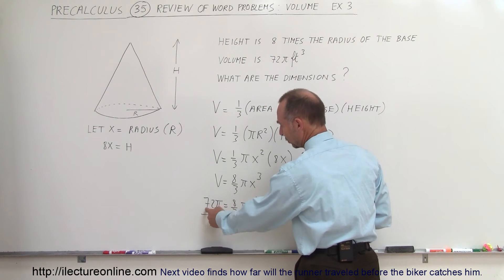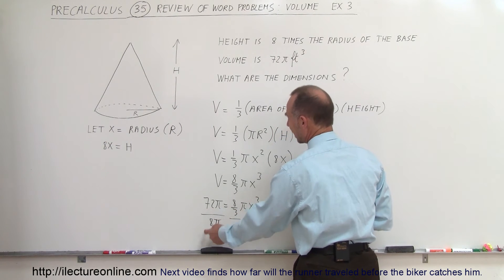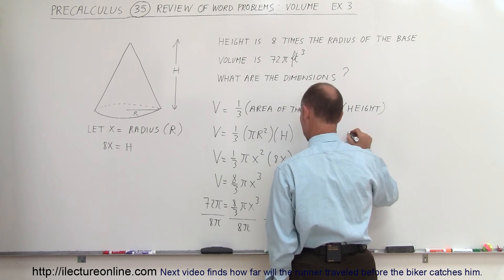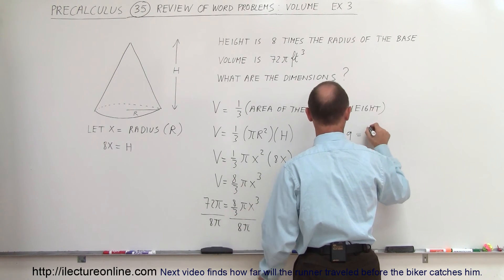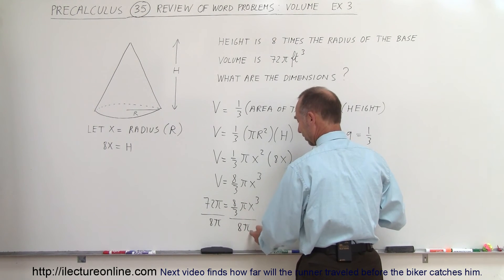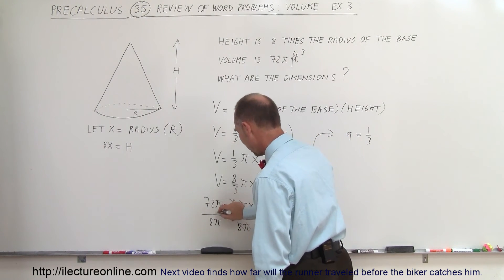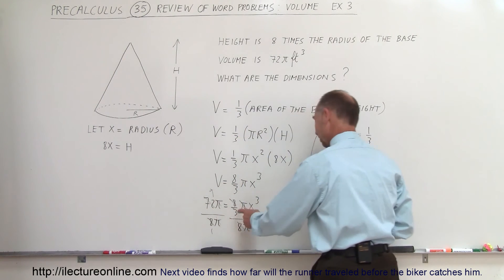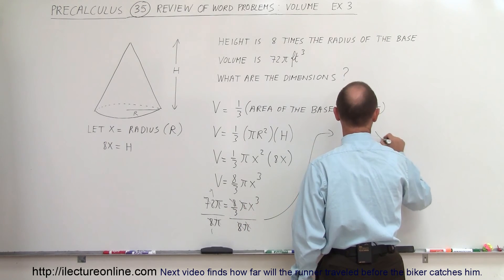The pi cancels out. 72 divided by 8 equals 9, so we have 9 equals one-third times X cubed — the 8 and pi both cancel out, leaving one-third times X cubed.